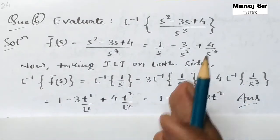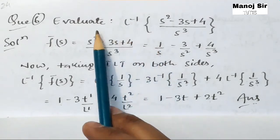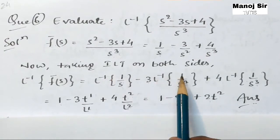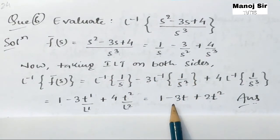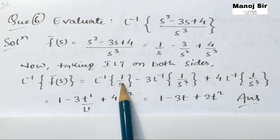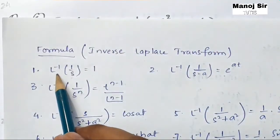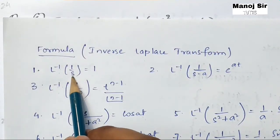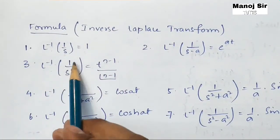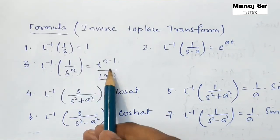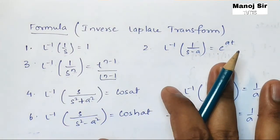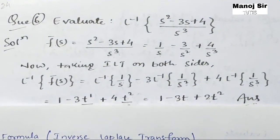This question is very easy compared to previous ones. The idea is simply to separate the terms and take the inverse Laplace transform on both sides. We used two formulas: the inverse Laplace transform of 1/s = 1, and the inverse Laplace transform of 1/s^n = t^(n-1) / (n-1)!. Hope you enjoyed this video — thank you for watching.